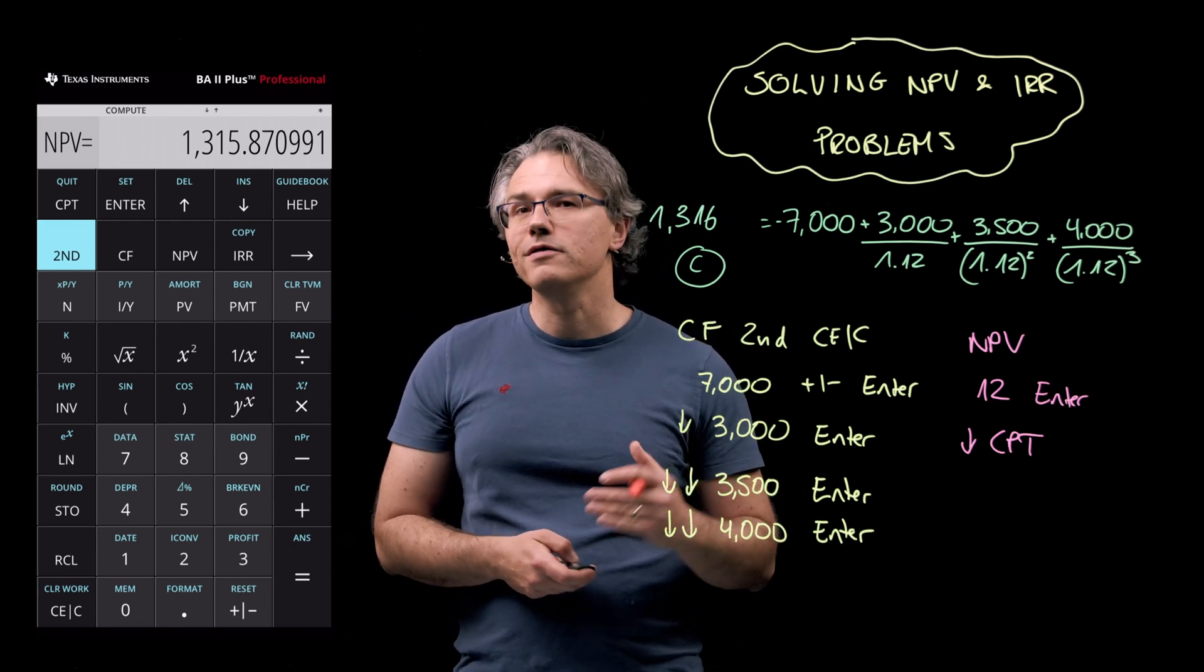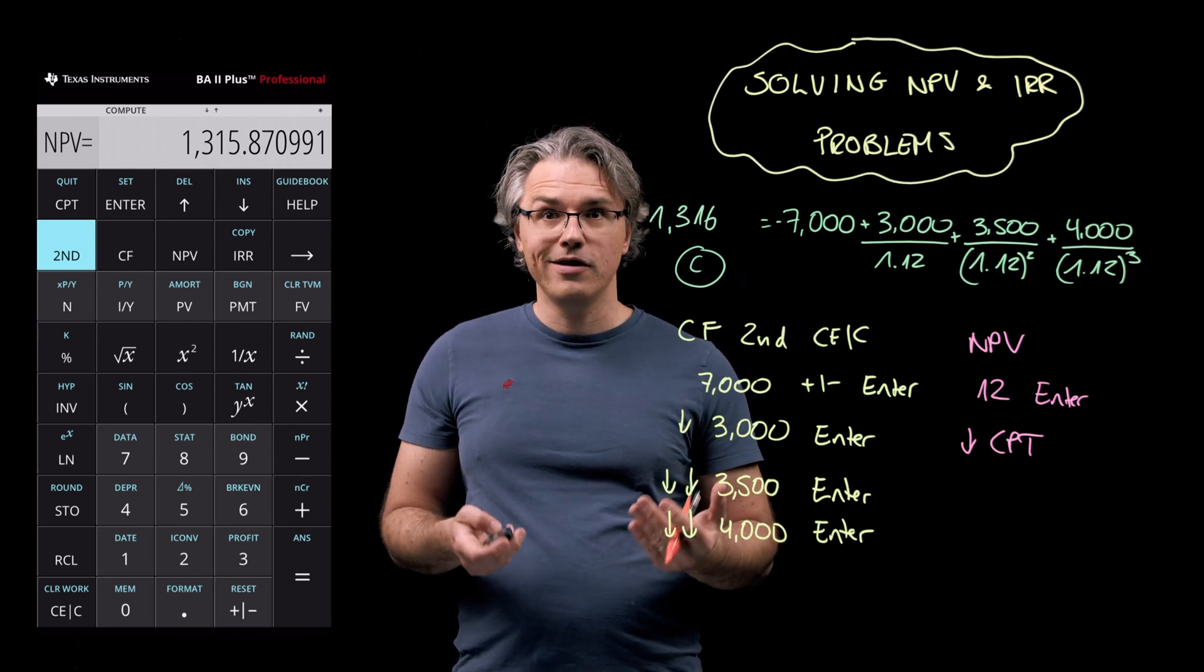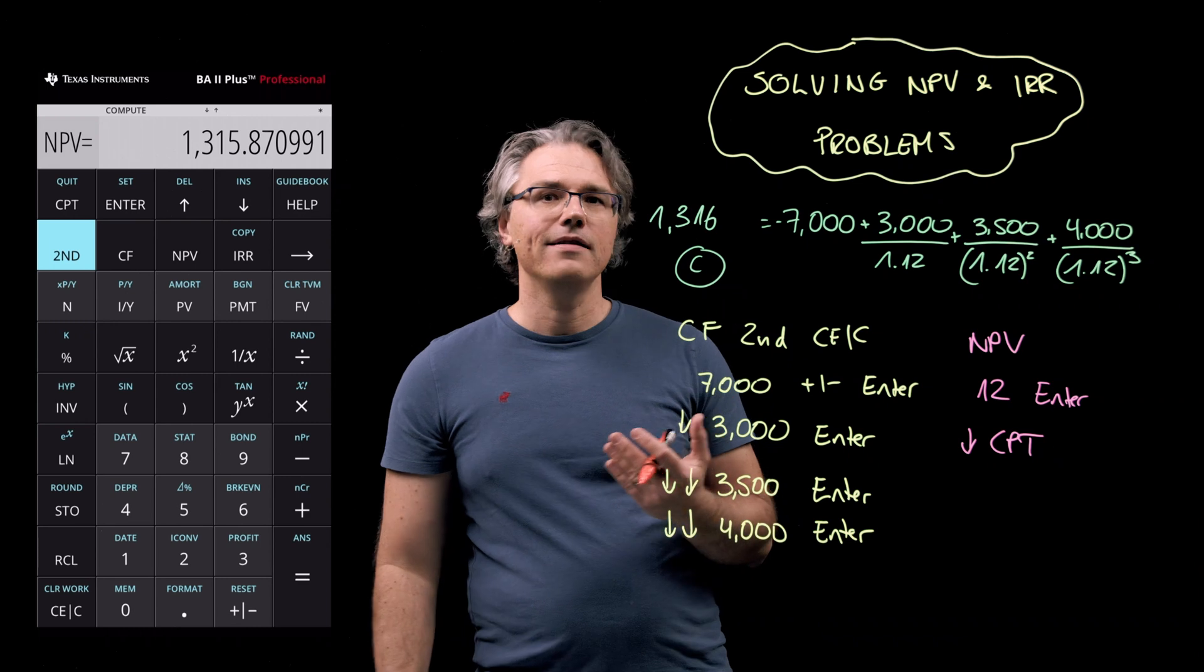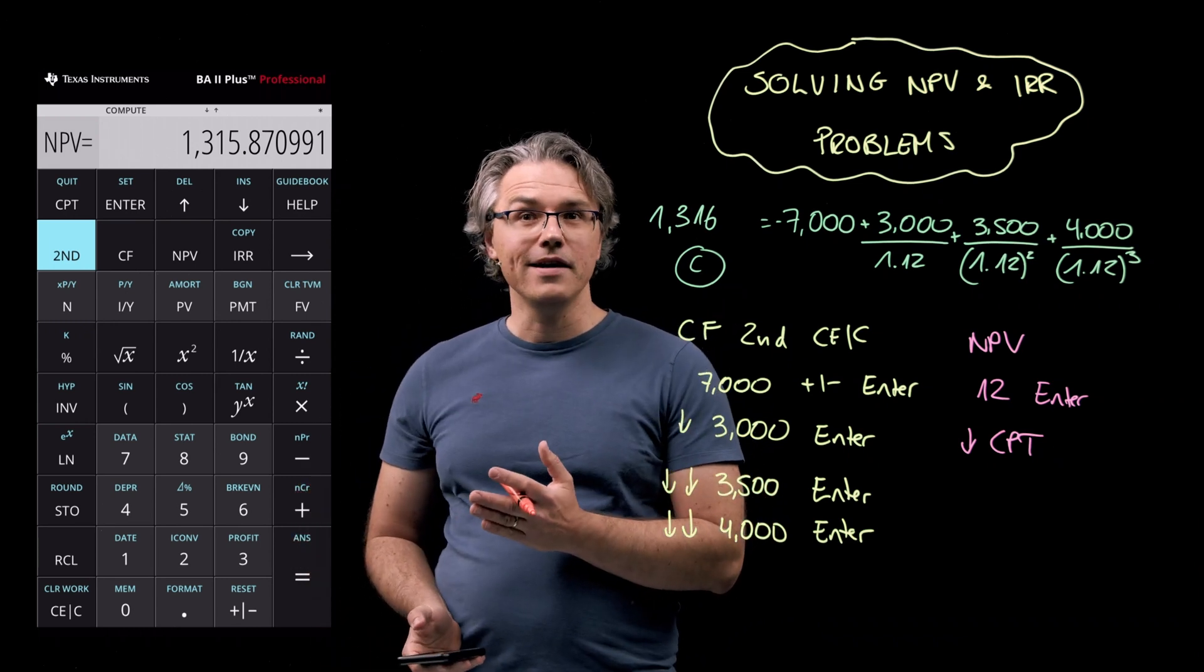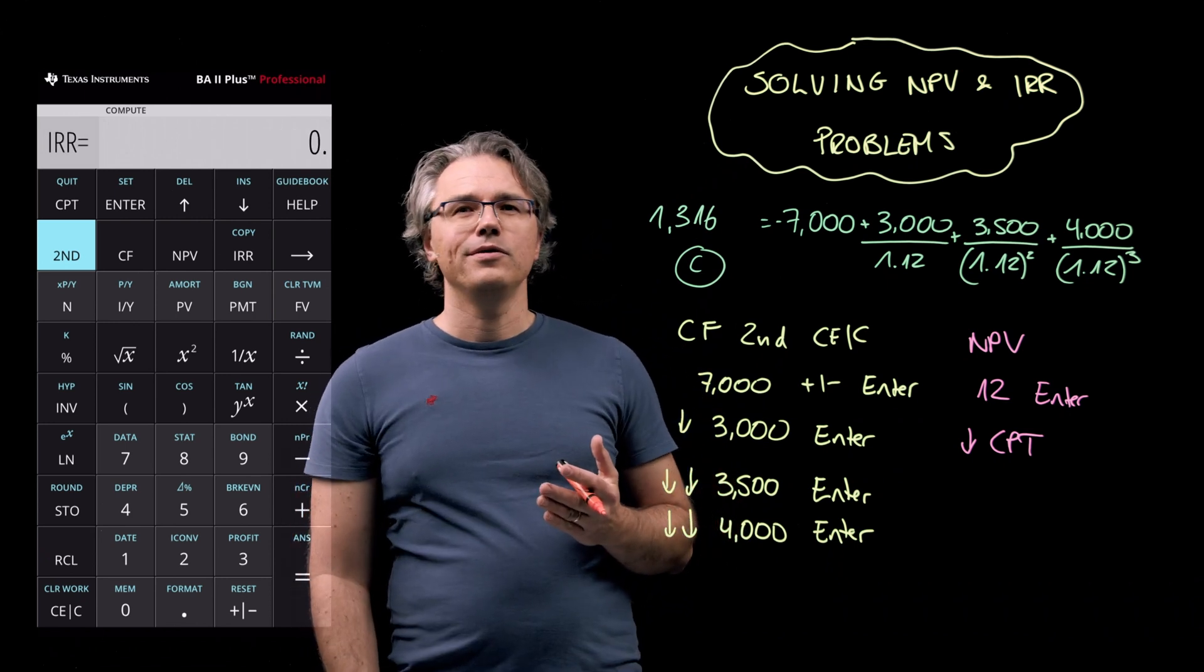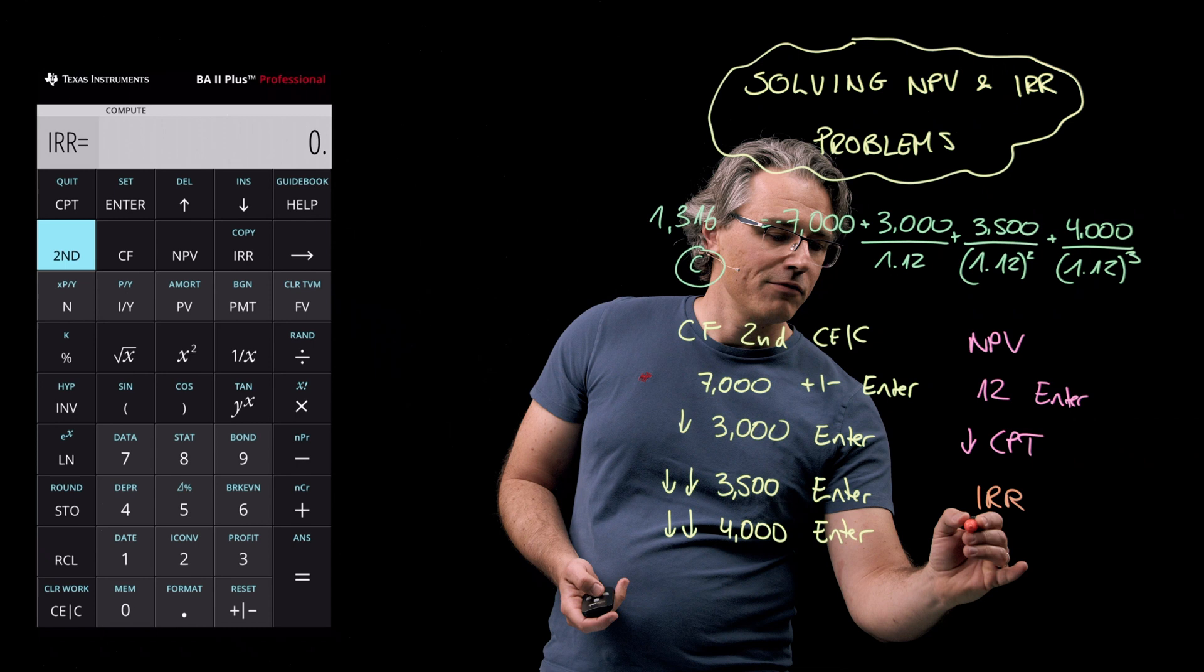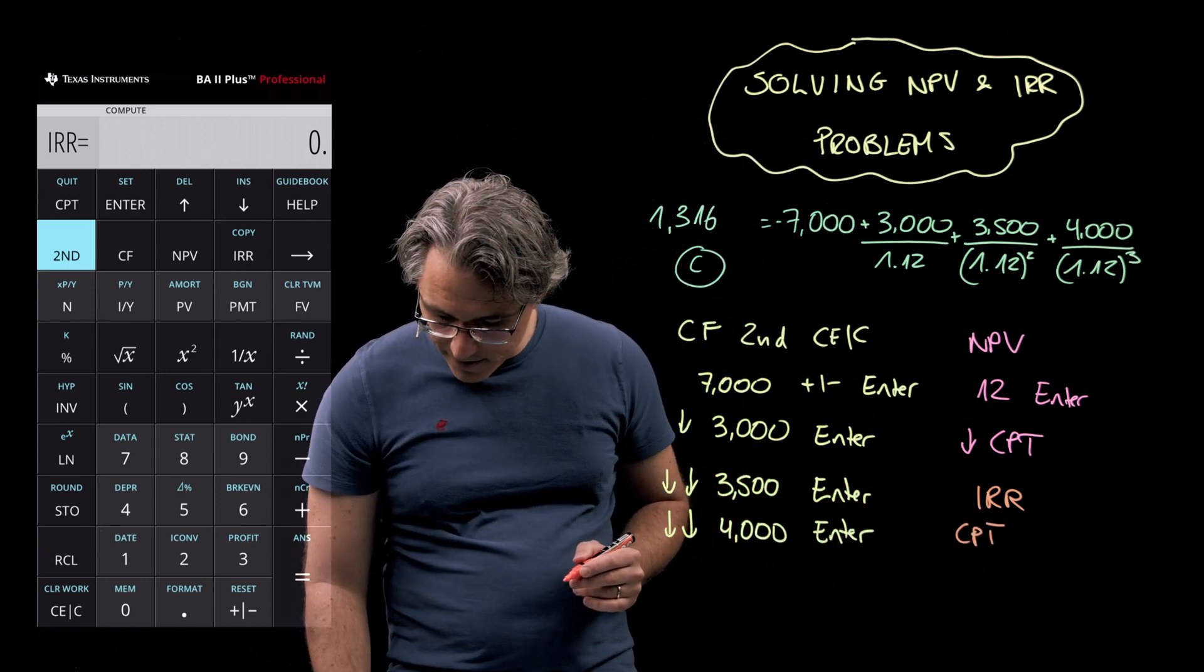And really, there is no easy way to find this value other than by using a spreadsheet, or of course, your calculator, which has an IRR function built in. So please locate the IRR key, which is right next to the NPV key, and press it now. And when you do, you see that it is ready to compute. So simply, once you've pressed IRR, follow this up with the compute key.